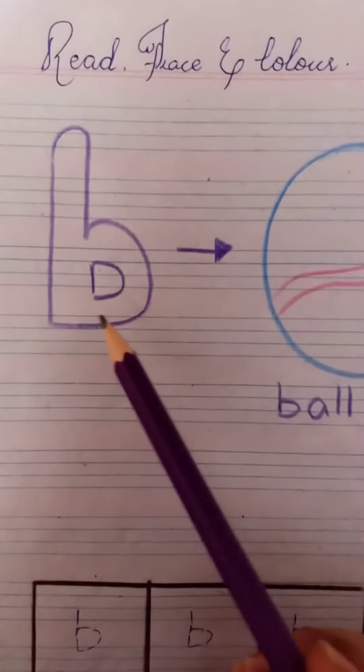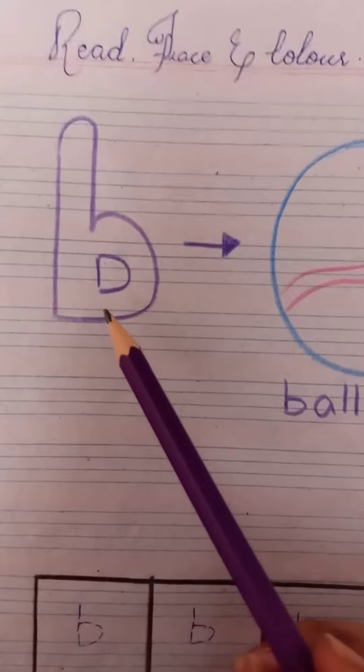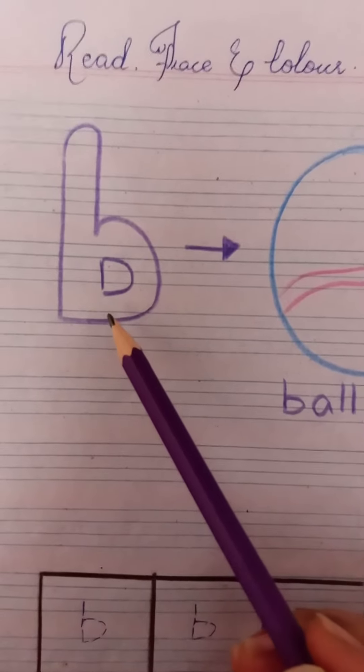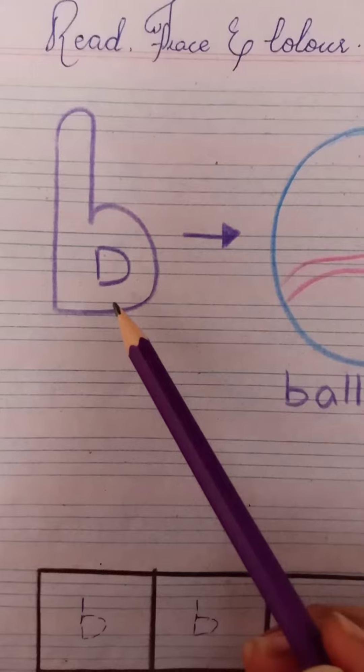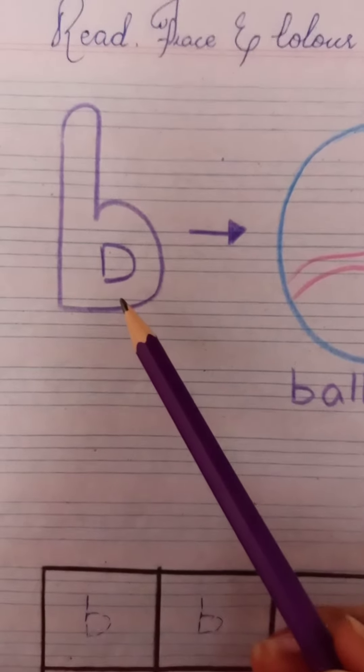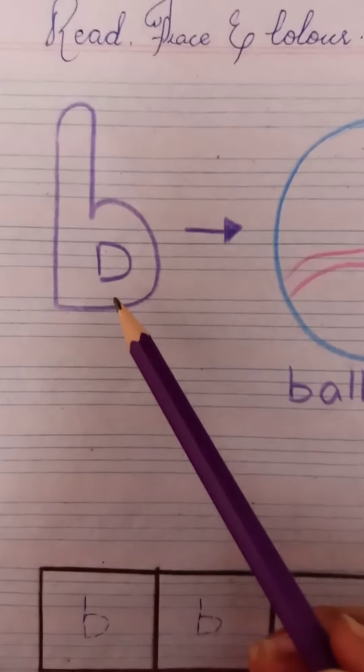Read, trace and color. Our new sound is B. What is this? This is B. What is the name of this letter? The name of this letter is B and the sound of this letter is B.